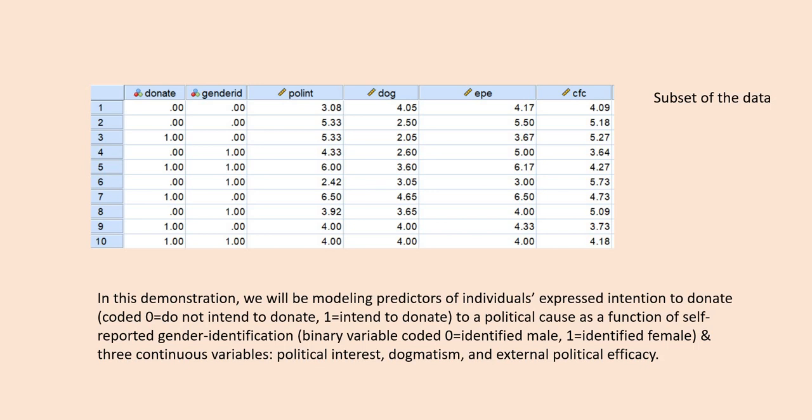In this demonstration we will be modeling predictors of individuals' expressed intention to donate to a political cause as a function of self-reported gender identification, political interest, dogmatism, and external political efficacy. The dependent variable is coded zero for 'do not intend to donate' and one for 'intend to donate.' Gender identification is already dummy coded — zero for identified male, one for identified female. Political interest, dogmatism, and external political efficacy are our continuous predictor variables.